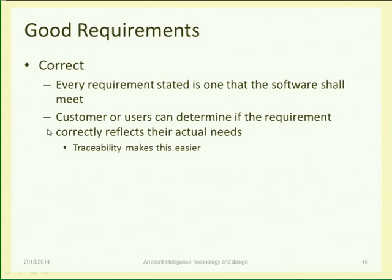Remember that a requirements document is double-sided: one side will be read by the customer or user, the other side by the developer, and the two sides should match. A good requirement is one where the user is able to understand whether the system described actually does what it needs. It's easier if you can trace how a given requirement — say, number 37 — will match to the final system. 'Do you see this button here? This button is in response to that requirement.'